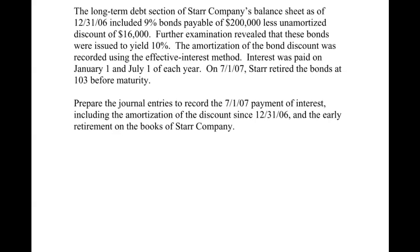The long-term debt section of the company's balance sheet as of 12/31/06 included 9% bonds payable of $200,000 less unamortized discount of $16,000. The bonds were issued to yield 10% and they use the effective interest method. The last one we looked at used straight line, so our numbers need to come from an effective interest table, which we don't have. So we'll have to think through that.